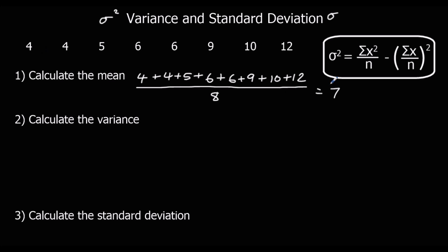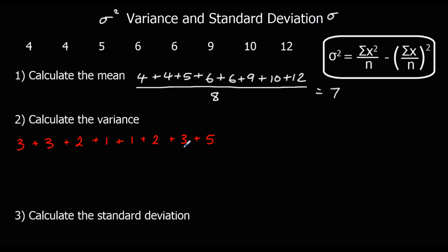So 4 is 3 from the mean of 7. The other 4 is also 3 from the mean. 5 is 2 from the mean. 6 is 1 from the mean. The other 6 is also 1 from the mean. 9 is 2 away from the mean. 10 is 3 away from the mean. And 12 is 5 away from the mean.